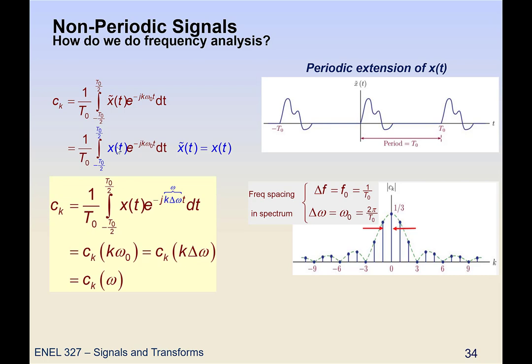Looking at the Fourier series expression for the coefficients, each basis function is at a frequency ω given by k·Δω — so k times Δω is the actual frequency associated with that coefficient. In essence, these coefficients are a function of frequency, and each coefficient is the amplitude of the phasor at that frequency contributing to the Fourier series.